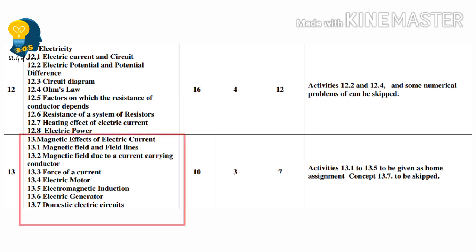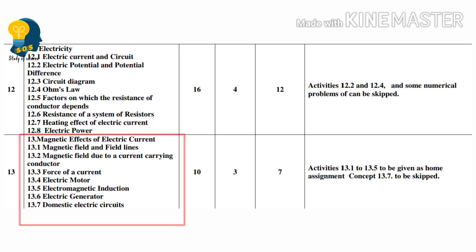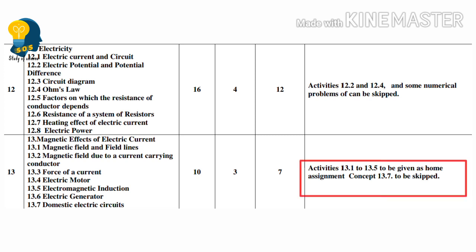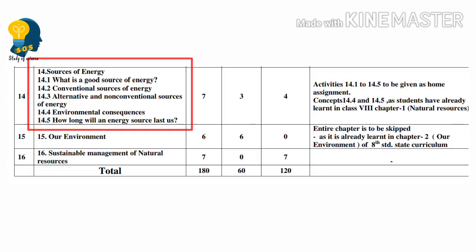Next lesson — Magnetic Effects of Electric Current. Concepts: Magnetic Field and Field Lines, Magnetic Field Due to Current Carrying Conductor, Force on Current, Electric Motor, Electromagnetic Induction, Electric Generator, Domestic Electric Circuits. All these concepts are important for exams. Activity 13.1 to 13.5 — mark these in your textbook as assignment. Concept 13.7 — Domestic Electric Circuits — skip.